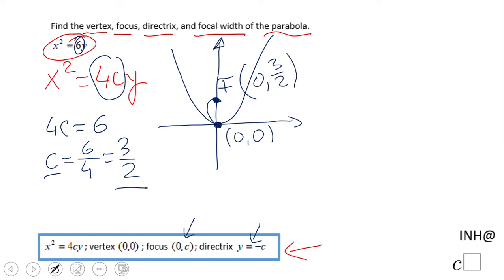And we move c down and we get the directrix, which is a line, and that will be y = -3/2.